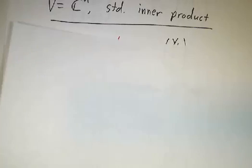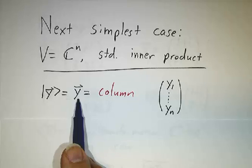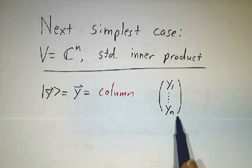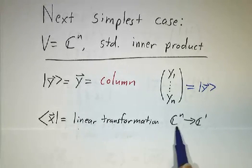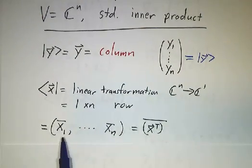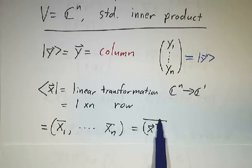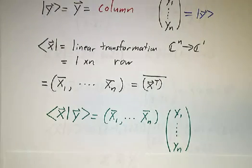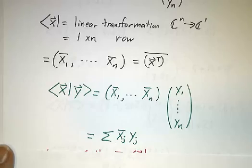How about a complex inner product? If we have a complex inner product, y is still a column — the ket y is the vector y, so kets are columns. Now x is a linear transformation from Cn to C1, so it's a 1 by n matrix. Notice it's not linear in x — you have to take the conjugate of x1, x2, ..., xn. This isn't x transpose; it's x conjugate transpose. Multiplying bra x with ket y gives x1-bar·y1 + x2-bar·y2 + ... + xn-bar·yn, which is exactly the standard inner product of x and y.